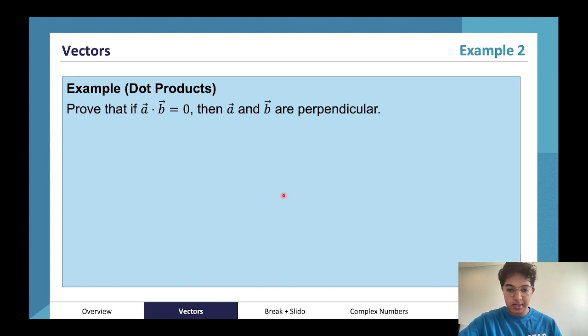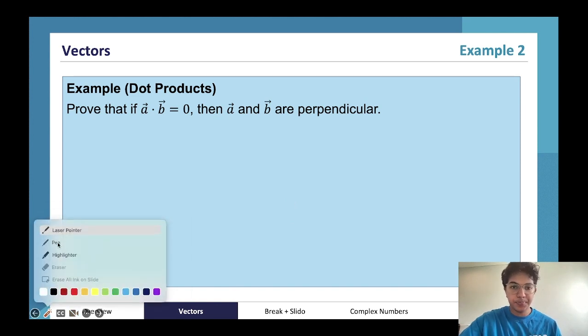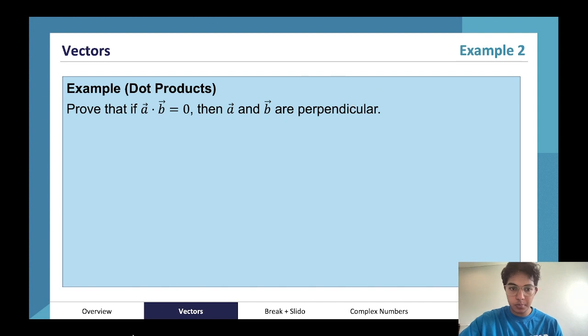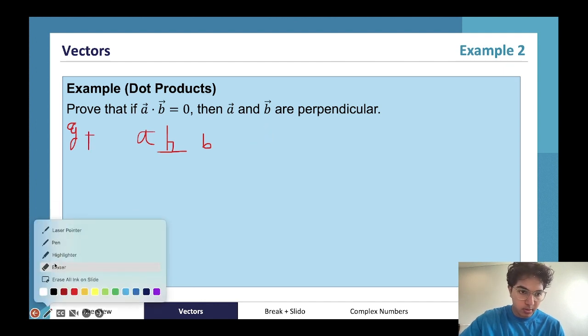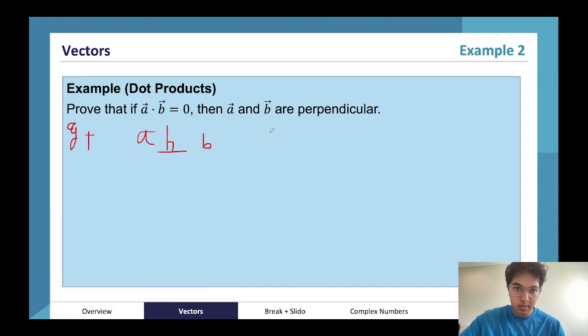All righty, hopefully that was enough time there. Let's sort of walk through it. I'm not going to spend too much time on it just because I've already talked about it earlier. So to show that a and b are perpendicular, so given that, I'm just gonna write, given that a is perpendicular to b, a dot b, or cosine theta, where theta obviously again is the angle between a and b.